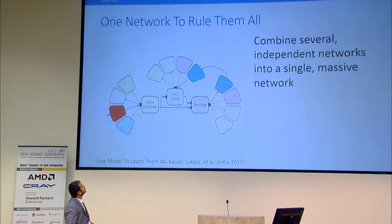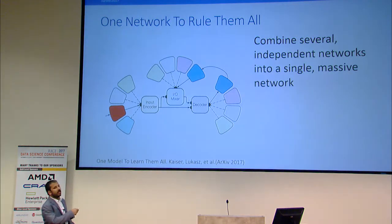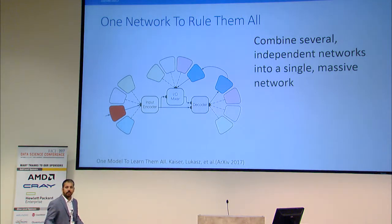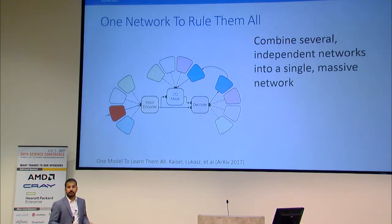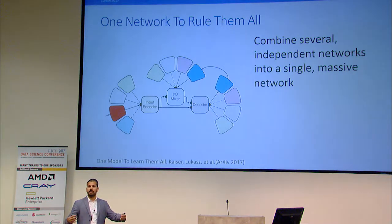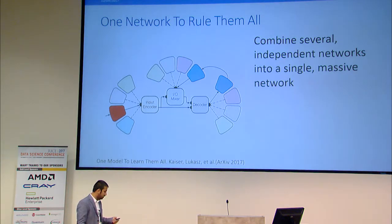In 2017, Google used pretty much the same concept and showed that you can design towards a generic AI: they designed a massive-scale neural network that takes text, images, audio — everything — fuses them into one model, and trains them simultaneously together. The idea is to have a generic representation which can work across all tasks. It was called 'one model to learn them all.'